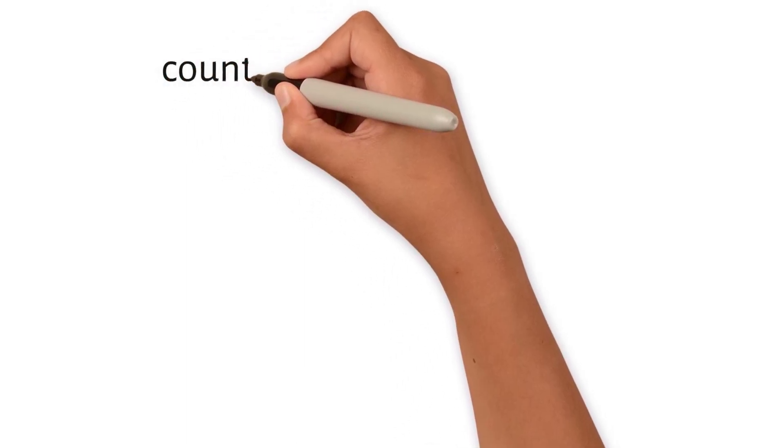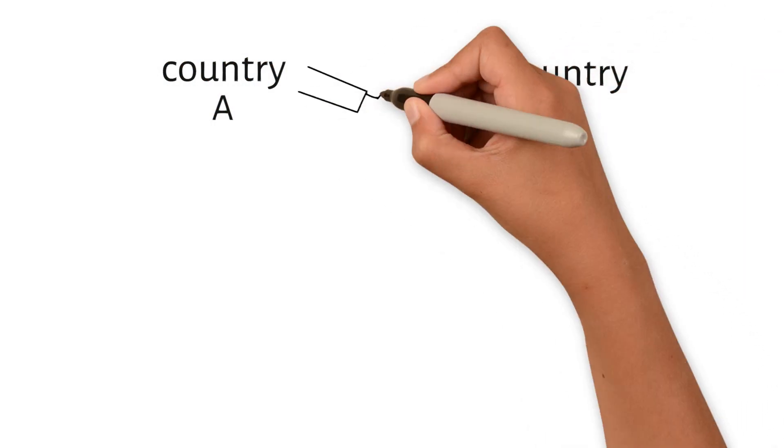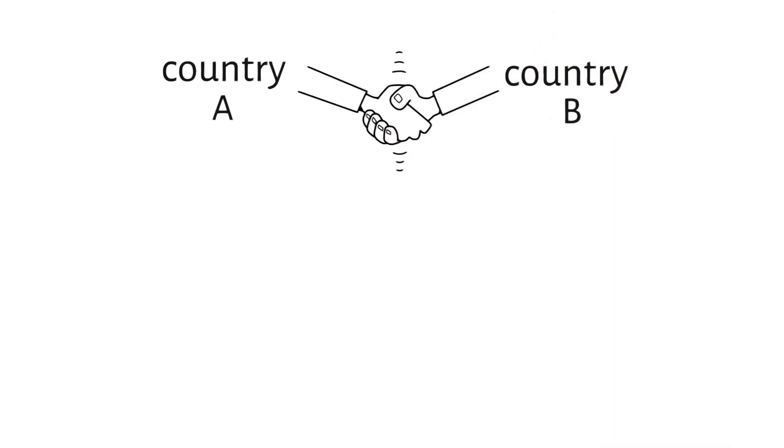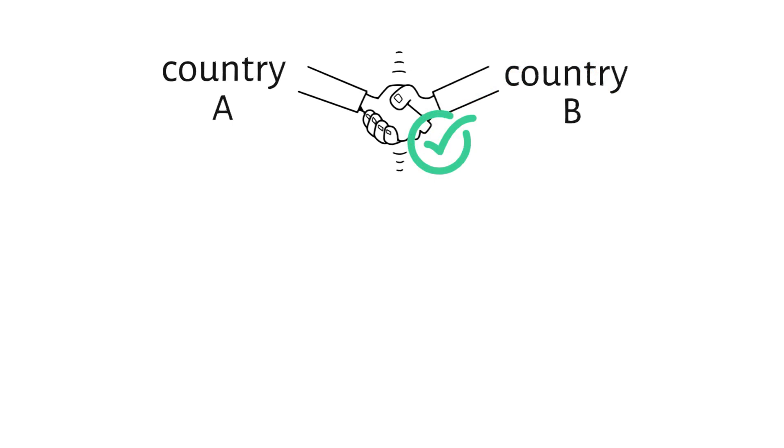The same is true if we try to solve this problem for a country instead of a prisoner. If two countries can talk to each other and make plans for the future, it makes more sense for them to work together than to betray each other. This is because both countries want to get help from the other country in the future.